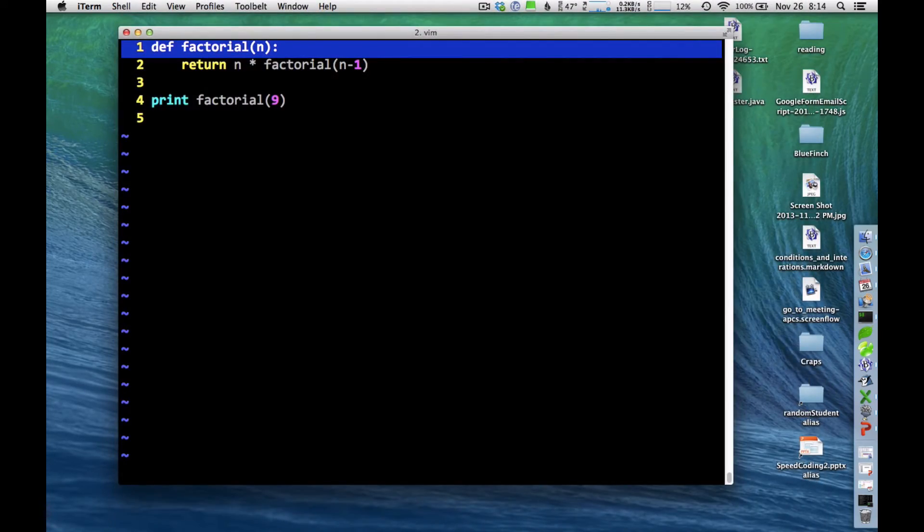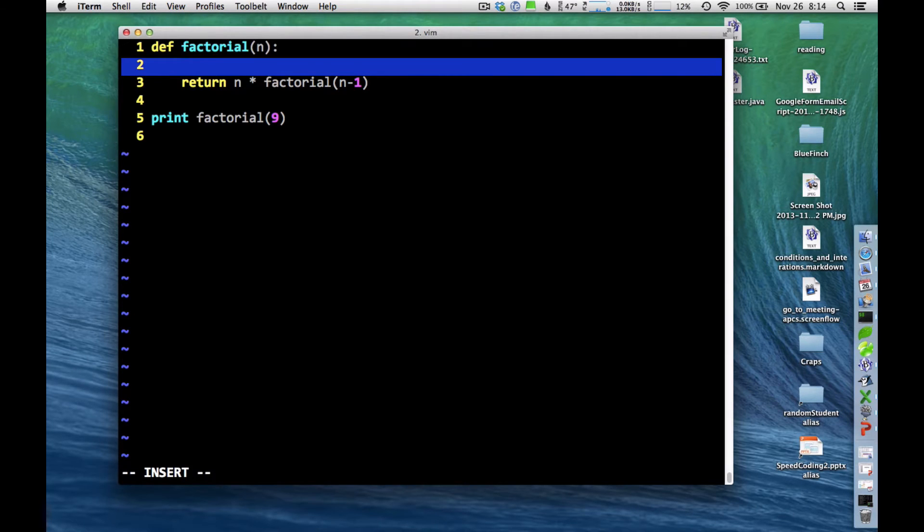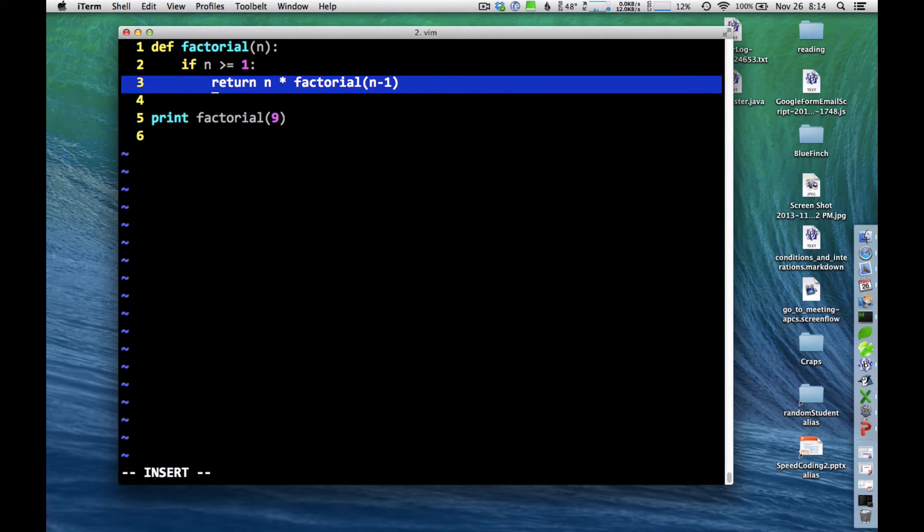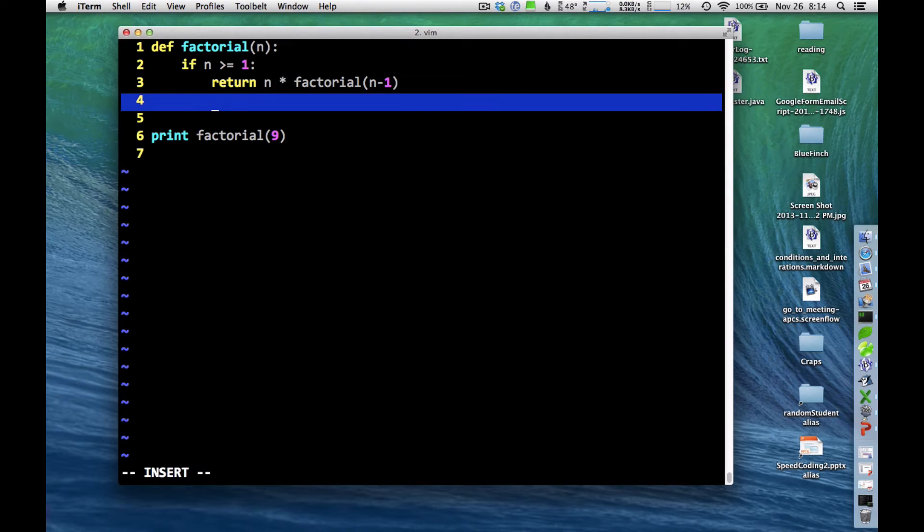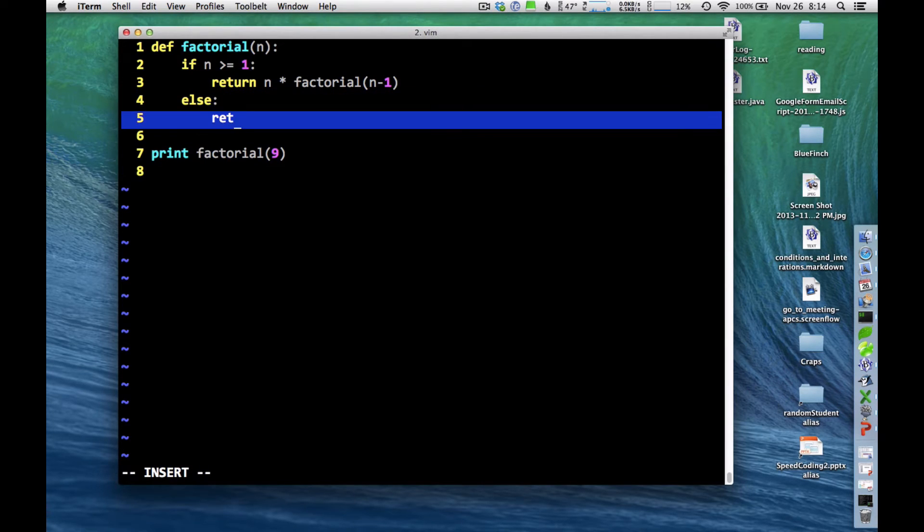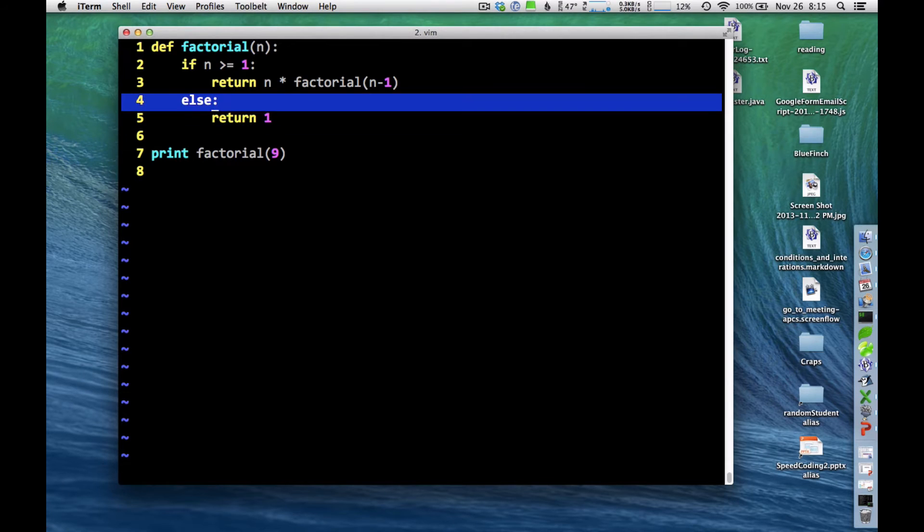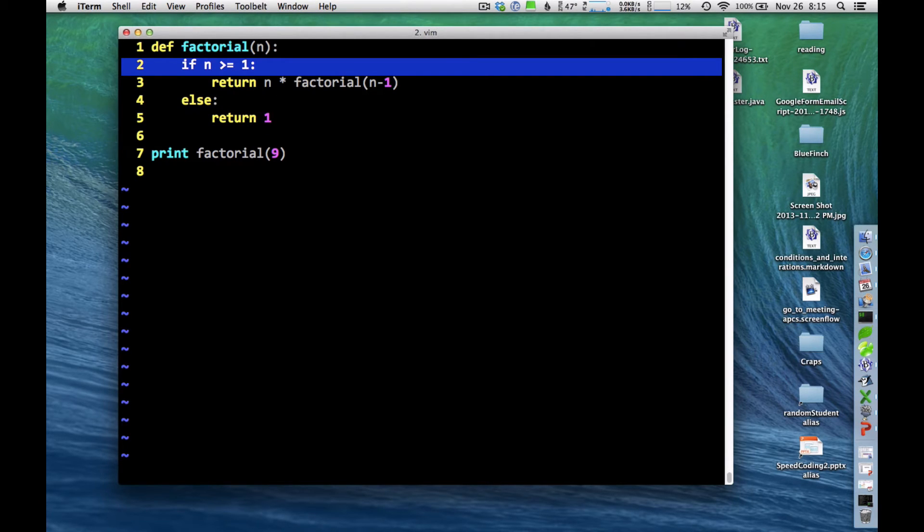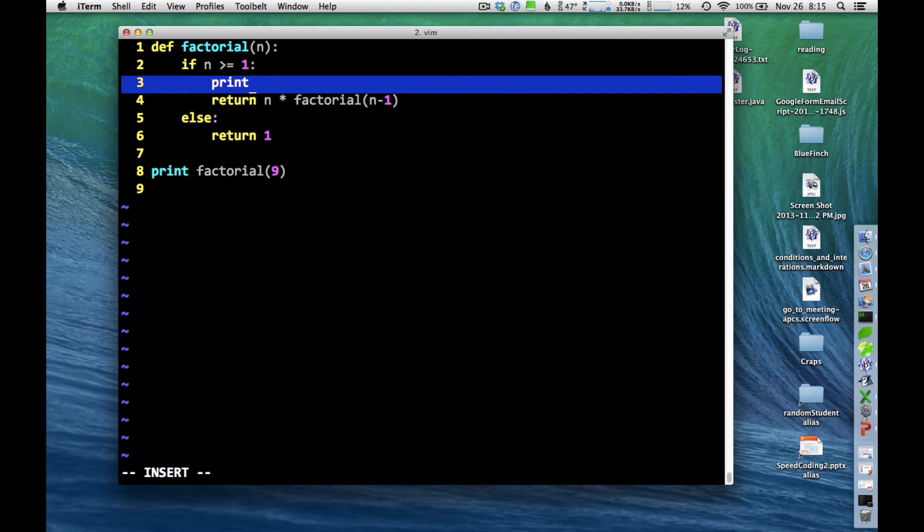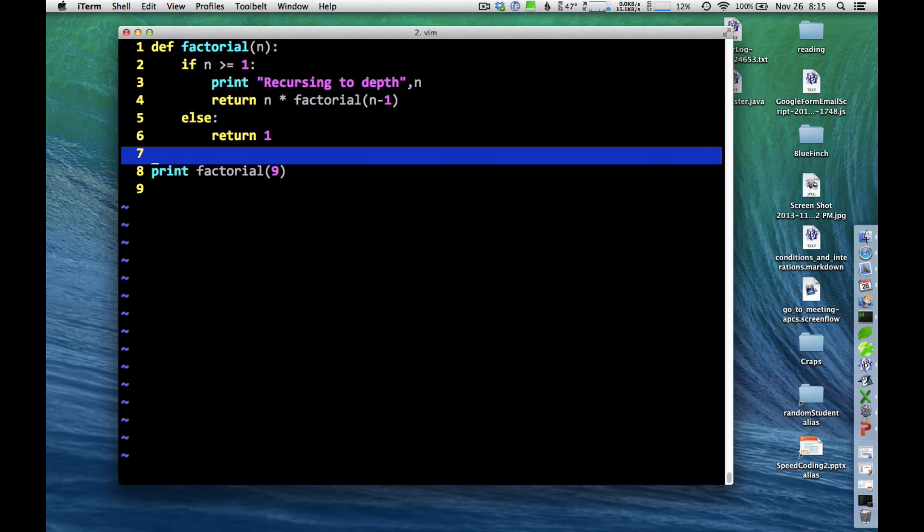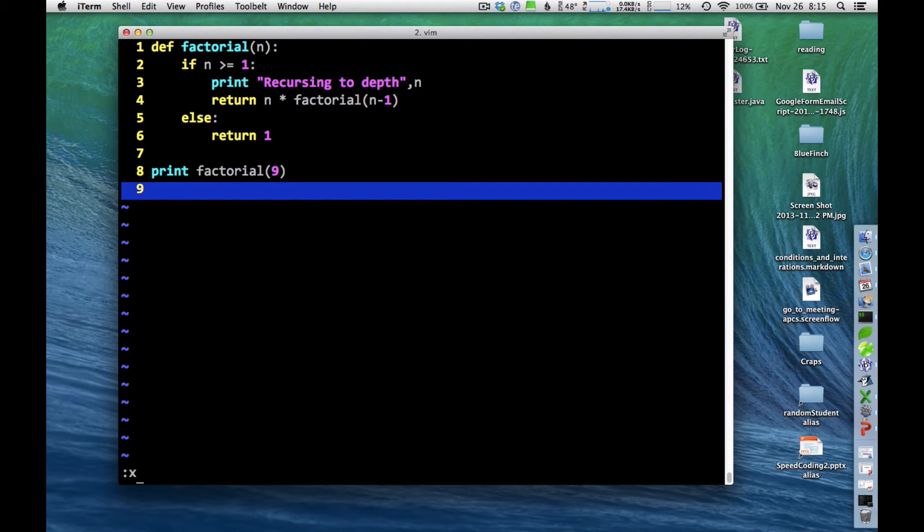So let me go in and add that if statement. I'm going to say if n is greater than or equal to one, then I'm going to return that n times factorial. Otherwise, I'm going to return one. And maybe I'm even going to add one more little statement in here. I'm going to print out that I'm recursing to a certain depth. So each time when I go in, print recursing to depth n. And that will be a little indication of what's going on. Let's try running that program and see what happens.